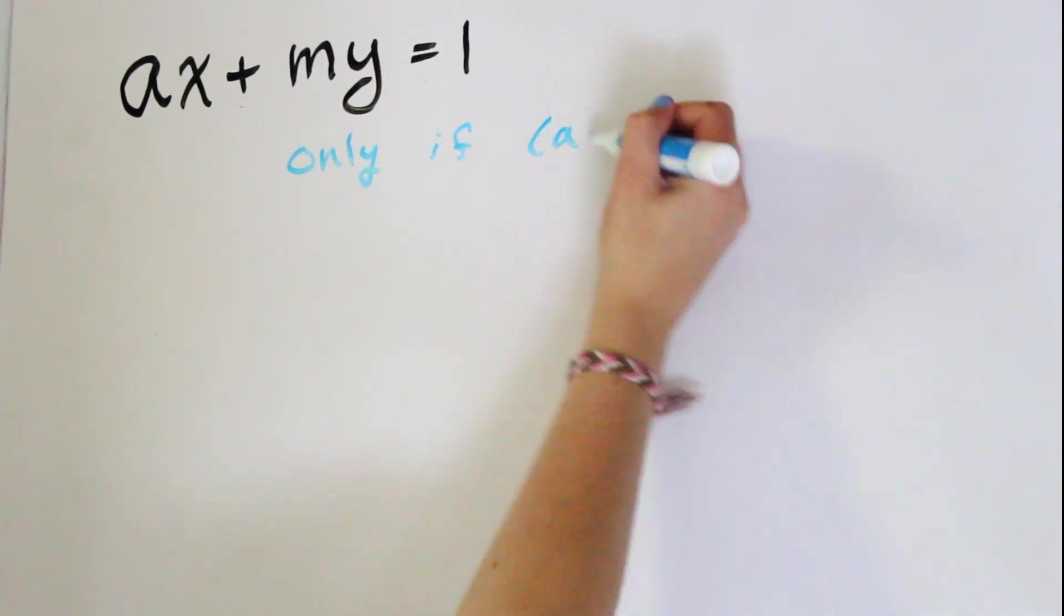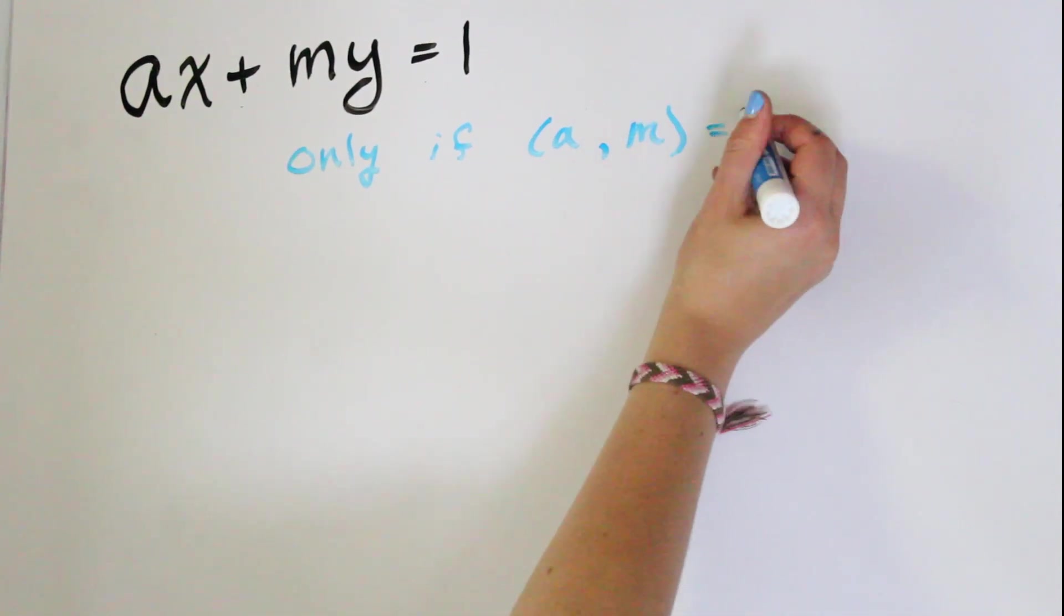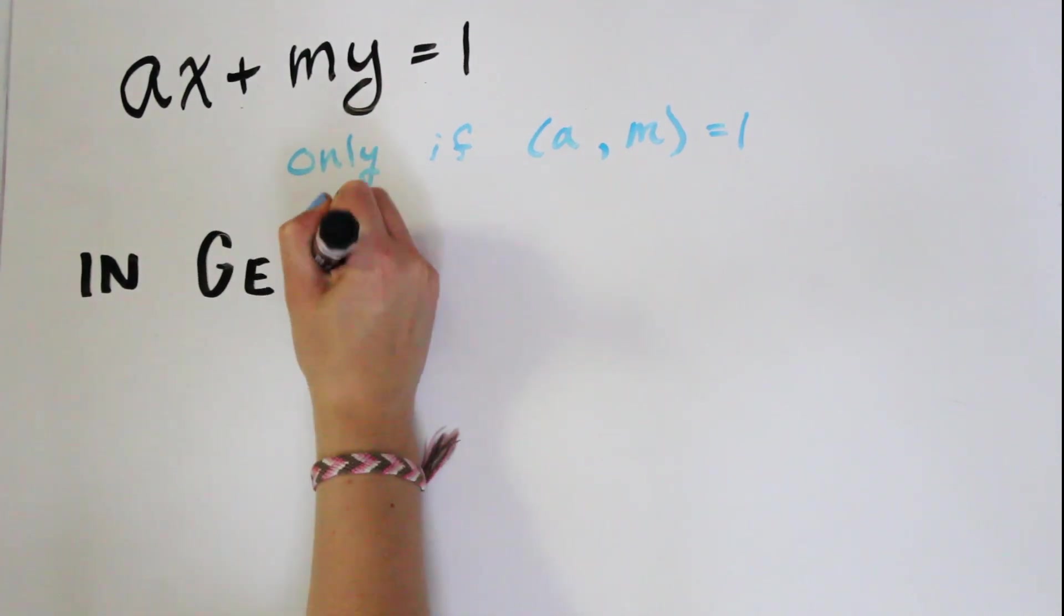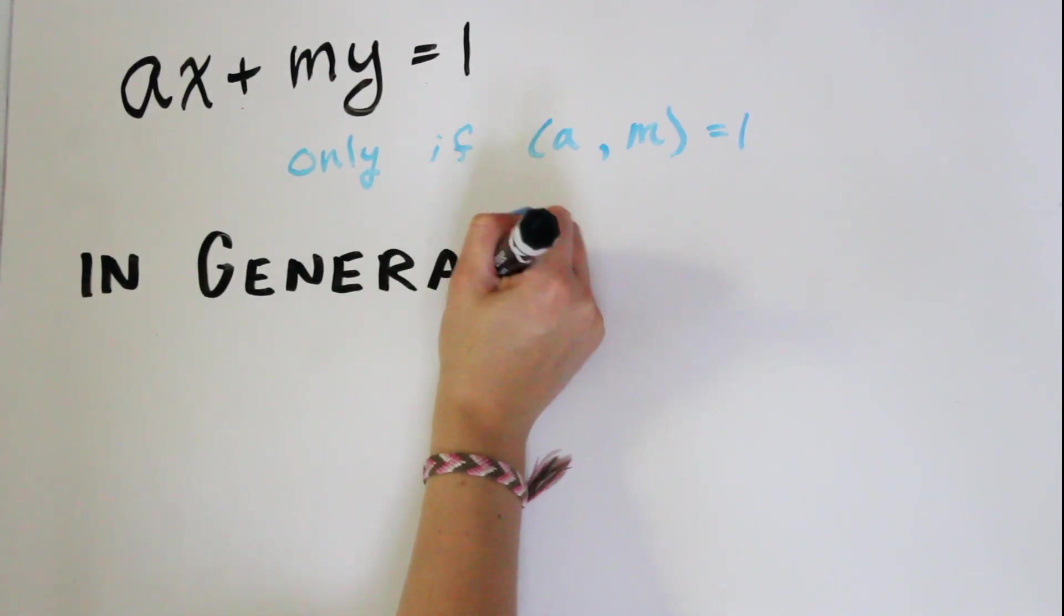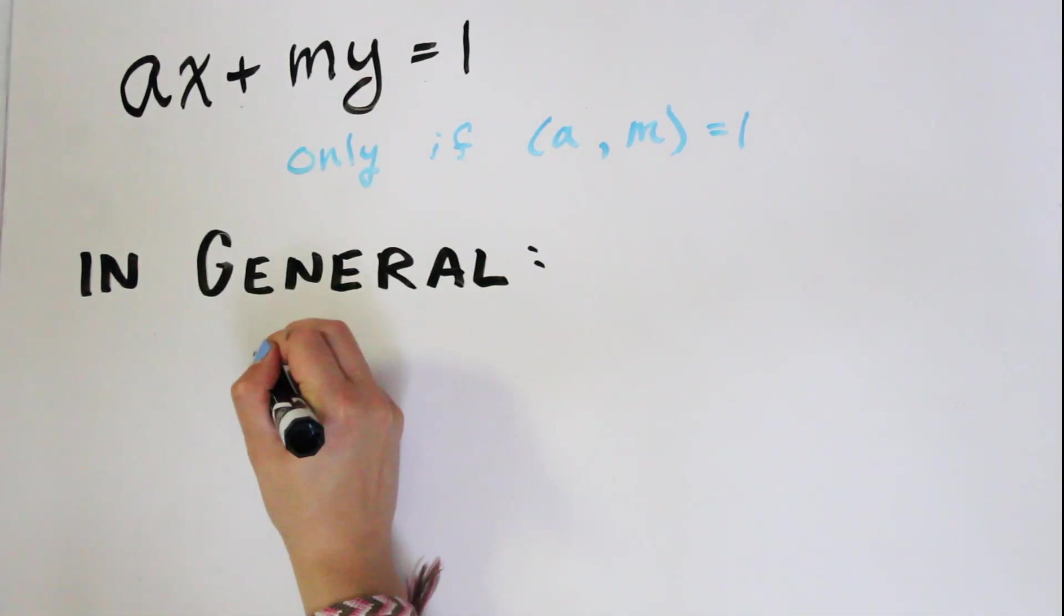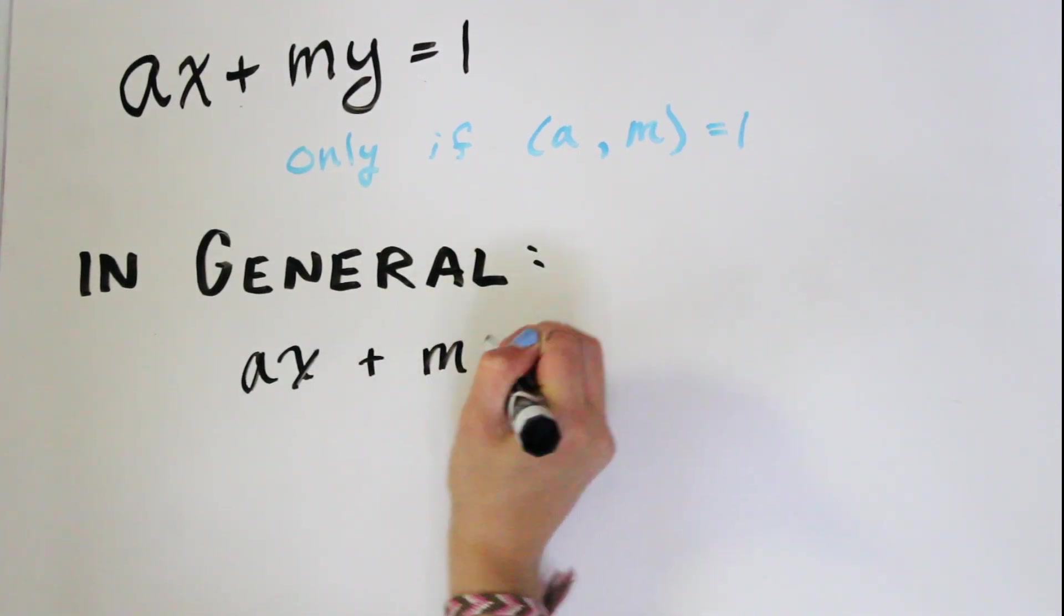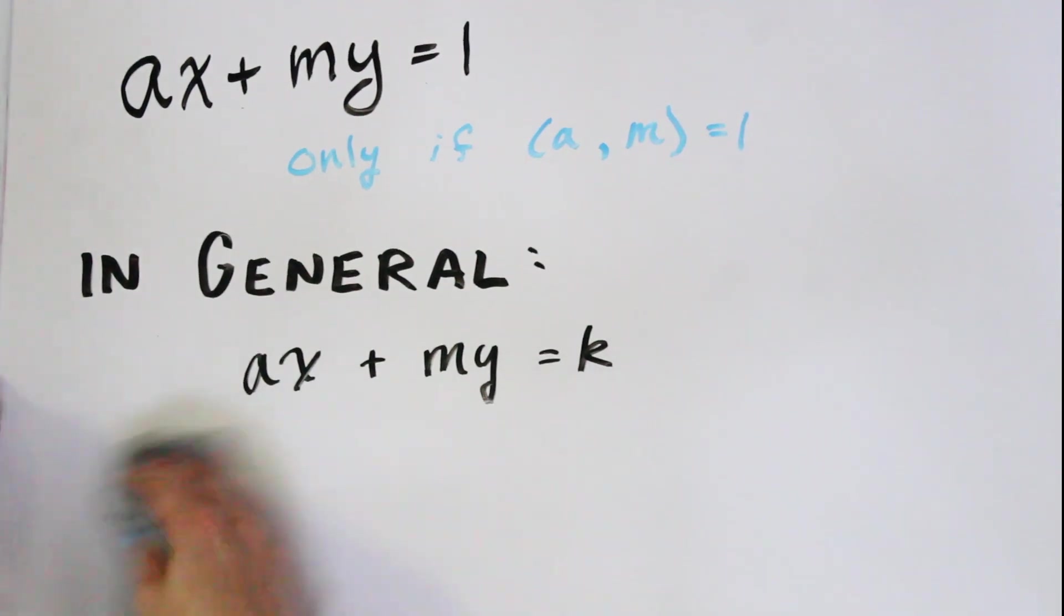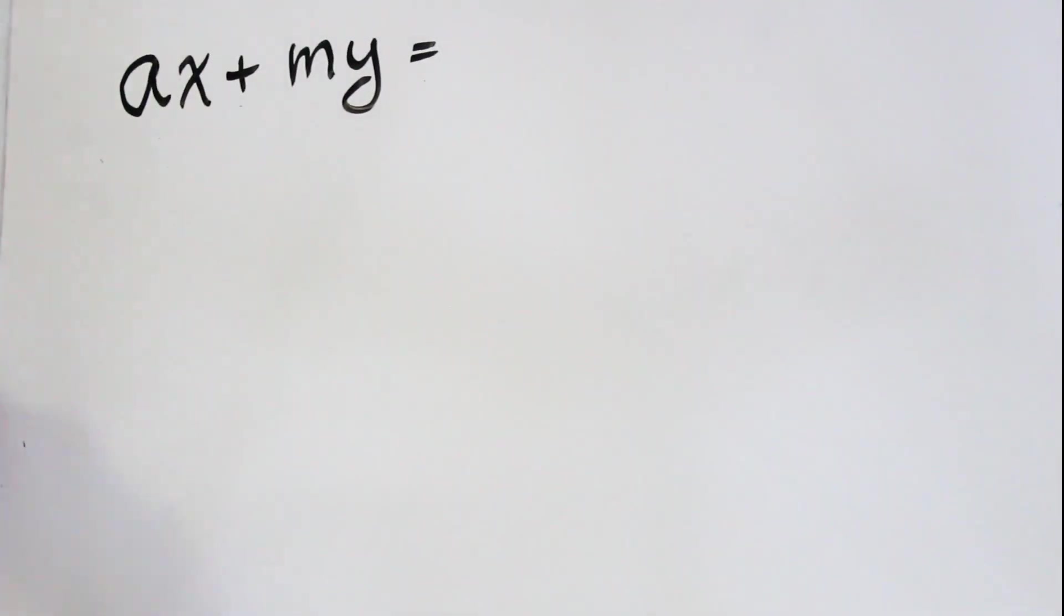And we know that this only has a solution if the greatest common divisor of a and m is 1. Basically saying that a only has an inverse mod m if a and m are coprime. We can generalize this. So Ax + my = some other integer k. This only has a solution if a and m, the greatest common divisor of a and m divides k. I'll prove this to you now.